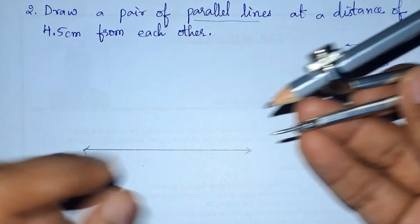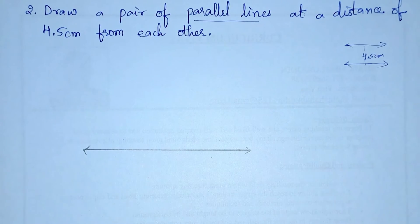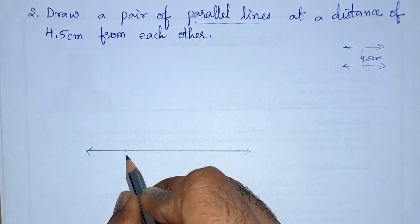We need a compass. Take any radius and from any point—first we will say any point. Let this point be A and point B. From these points we will draw two semicircles.